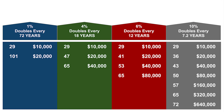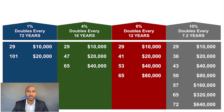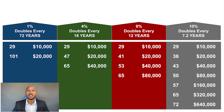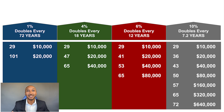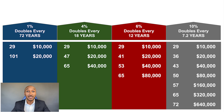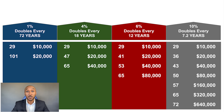Here's how it works: when doing this calculation, you want to take the interest rate that you're earning and divide it into the number 72. Looking at each color section, each one is earning a different interest rate. In the blue section, the interest rate is 1%, so you take 1 and divide it into 72. The answer tells you an approximate number of years it'll take for that money to double. One divided into 72 is 72, so if someone's earning 1% on their money, their money's going to double every 72 years. Looking at an individual who is 29 years old and invested $10,000, since they're earning 1%, their money would double to $20,000 by age 101.